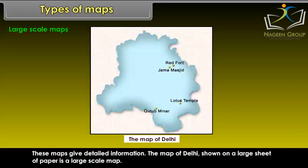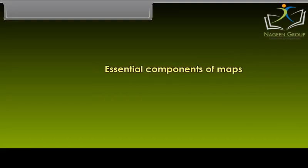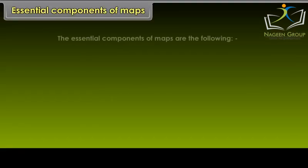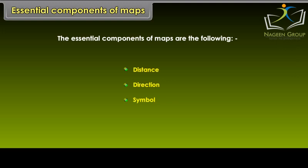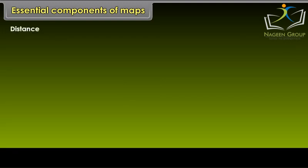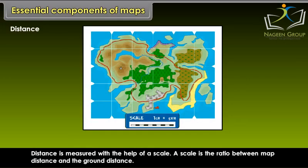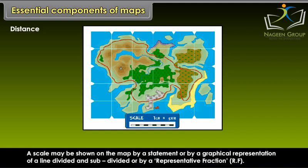The map of Delhi, shown on a large sheet of paper, is a large scale map. The essential components of maps are Distance, Direction, and Symbols. Distance is measured with the help of a scale. A scale is the ratio between map distance and the ground distance. A scale may be shown on the map by a statement, by a graphical representation of a line divided and subdivided, or by a representative fraction (RF).